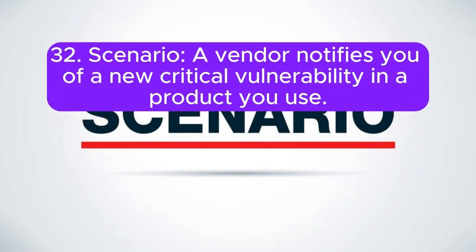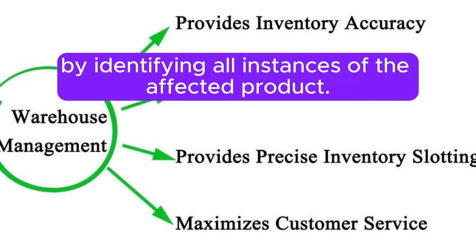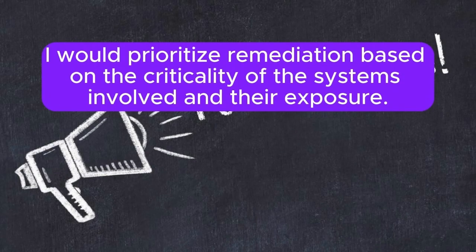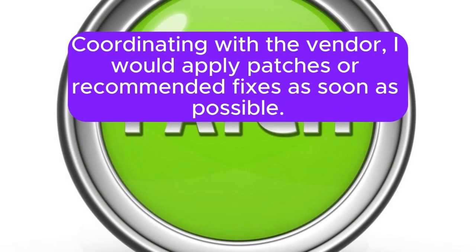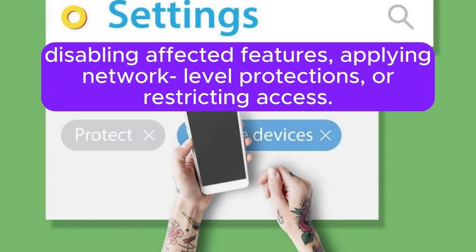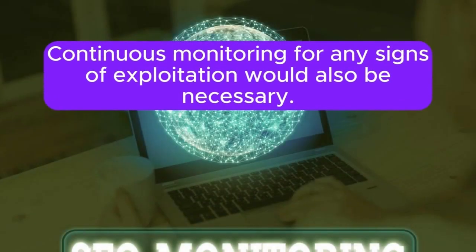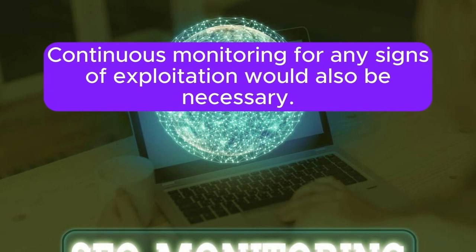Scenario 32: A vendor notifies you of a new critical vulnerability in a product you use. What is your response plan? I would immediately assess the impact of the vulnerability on our environment by identifying all instances of the affected product, and prioritize remediation based on the criticality of the systems involved and their exposure. Coordinating with the vendor, I would apply patches or recommended fixes as soon as possible. If a patch isn't available, I would implement temporary mitigation measures such as disabling affected features, applying network-level protections, or restricting access. Communication with stakeholders about the risk and mitigation steps is essential. Continuous monitoring for any signs of exploitation would also be necessary.